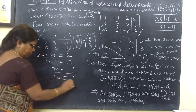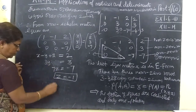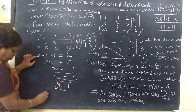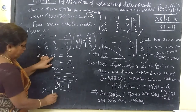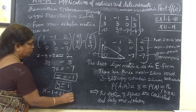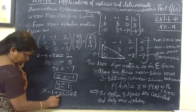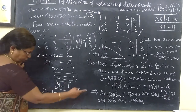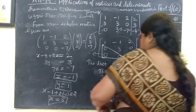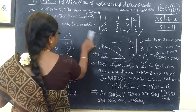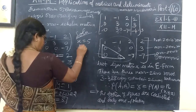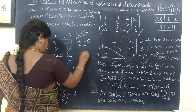Substituting back into row 1: x - y + 2z = 2. With y = 1 and z = -1 (from -7z = -7): x - 1 + 2(-1) = 2 gives x - 1 - 2 = 2, so x - 3 = 2, therefore x = 5. The solution is x = 5, y = 1, z = -1.